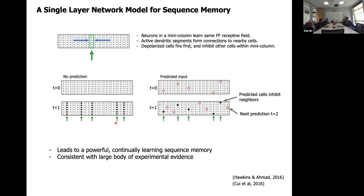There's a fundamental idea that you need unique representations of inputs in different contexts. The math shows there's a very large number of contexts you can encode with the same input.